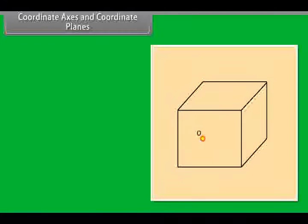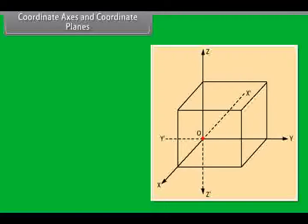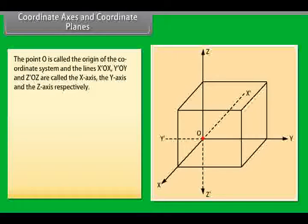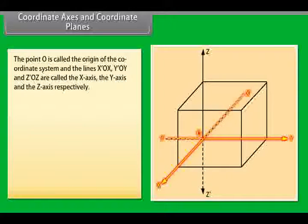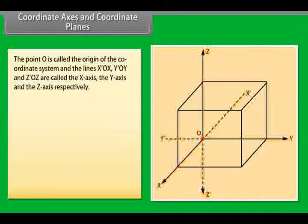Let us start with an arbitrary point O in space and draw three mutually perpendicular lines. The point O is called the origin of the coordinate system and the lines x-ox, y-oy and z-oz are called the x-axis, the y-axis and the z-axis respectively. The positive direction of the axis is indicated by arrows with thick lines.